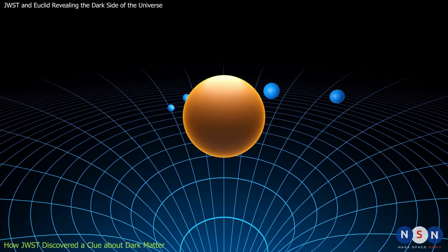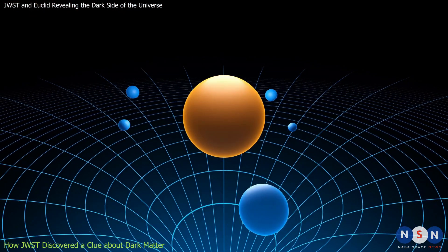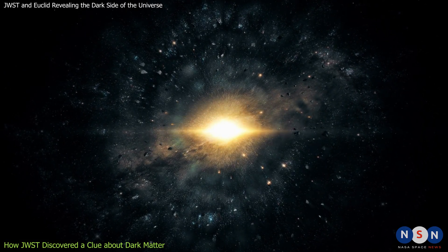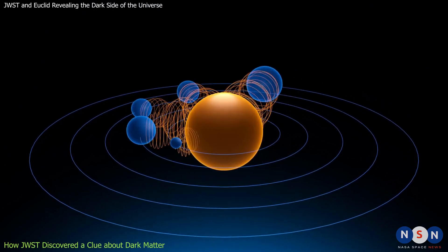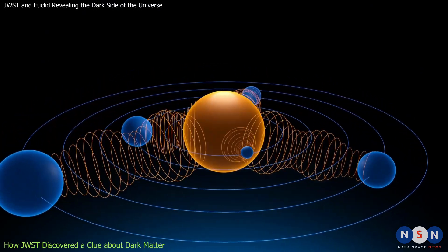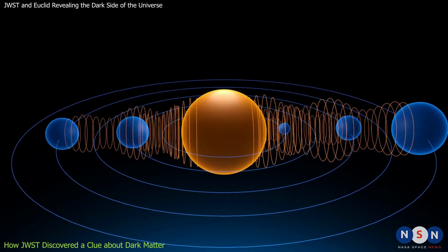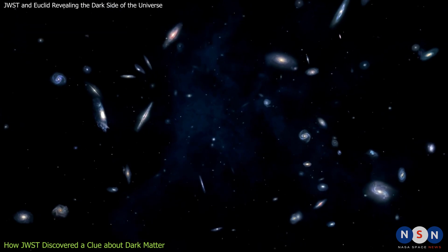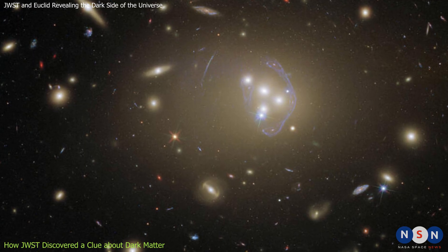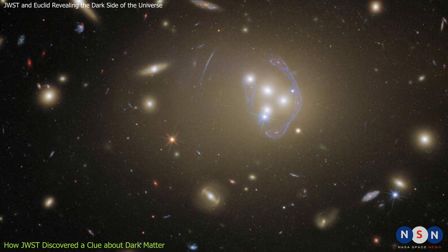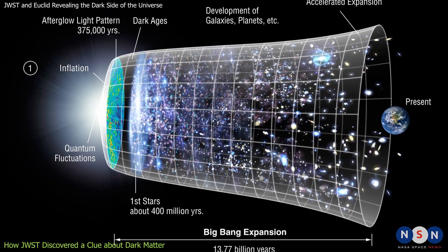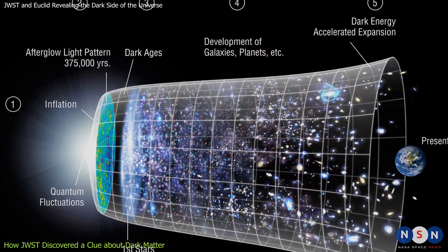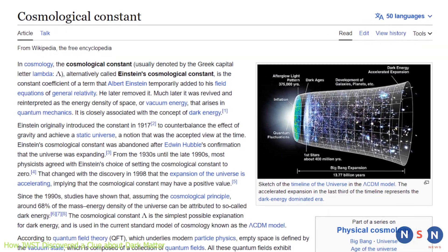This discovery could also help us test some alternative theories of gravity that try to explain dark energy without invoking a mysterious force or substance. Some of these theories predict that gravity behaves differently on large scales than on small scales, and that this could affect how dark matter moves and clusters in the universe. Webb's observations of Abel 3827 could help us test these theories and compare them with the standard model of cosmology, which assumes that gravity works the same everywhere and that dark energy is a cosmological constant.